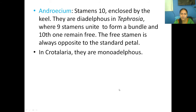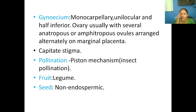Descendingly imbricate or vexillary aestivation can be observed. The androecium has 10 stamens, with the 9+1 arrangement visible. In some cases, the monadelphous condition is seen — a single bundle of 10 stamens.